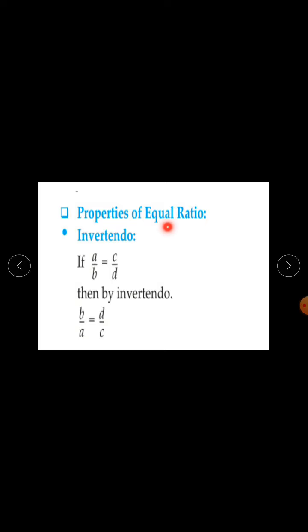Properties of equal ratios. If A, B, C, D are positive integers, the first property of equal ratios is invertendo.